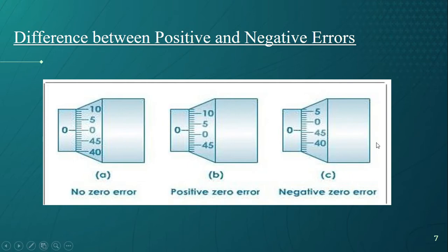This next slide demonstrates how these zero errors occur in instruments by taking the example of the screw gauge. If you see in the most left picture, the zero of main scale of screw gauge coincides with the zero of circular scale. That means the reading measured through this instrument will have no zero error.